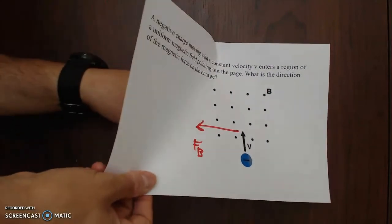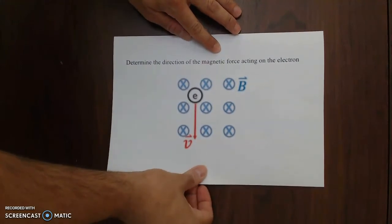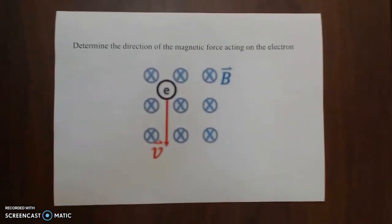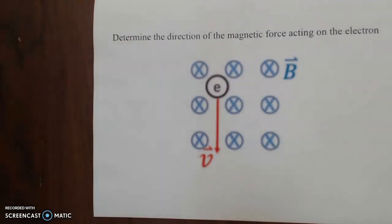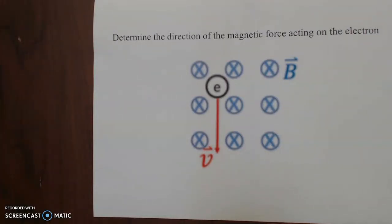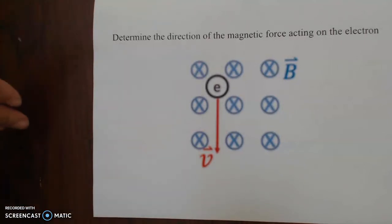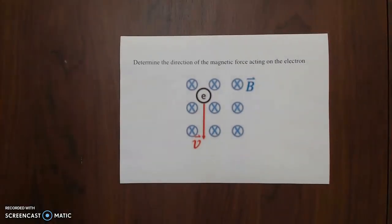Let's try another example for the negative charge. This question asks me to determine the direction of the magnetic force acting on an electron — which means it's a negative charge. From the diagram, the electron is moving south in a magnetic field represented by crosses, meaning the field is going into the page away from me. So let's apply the right hand rules one more time.